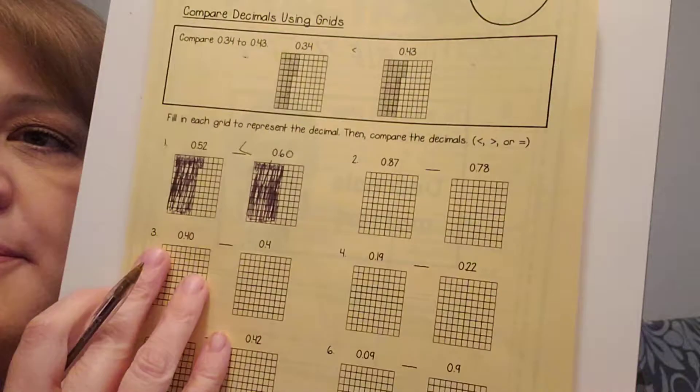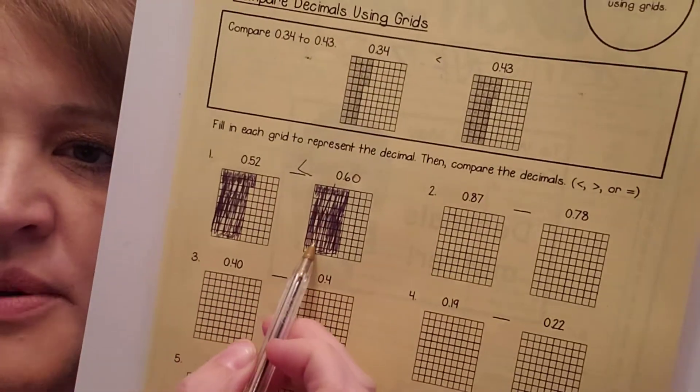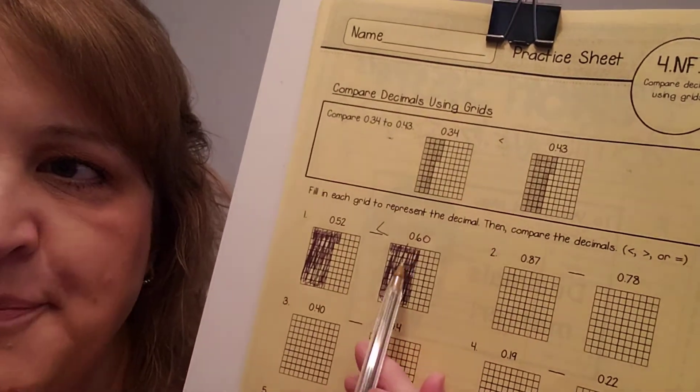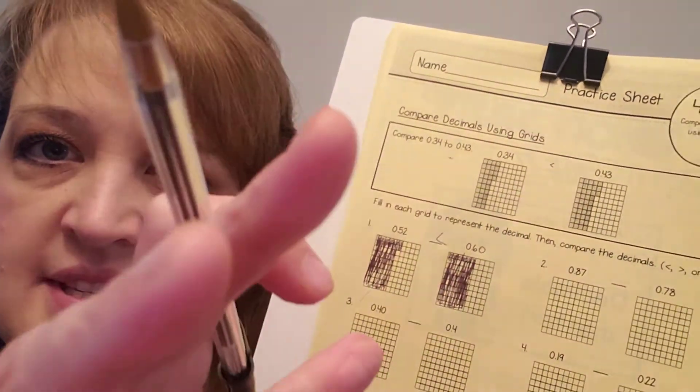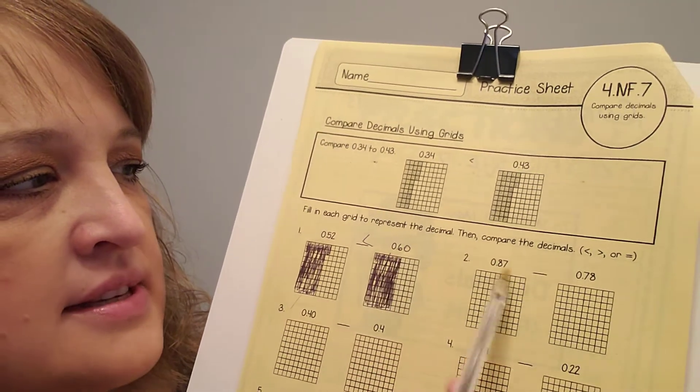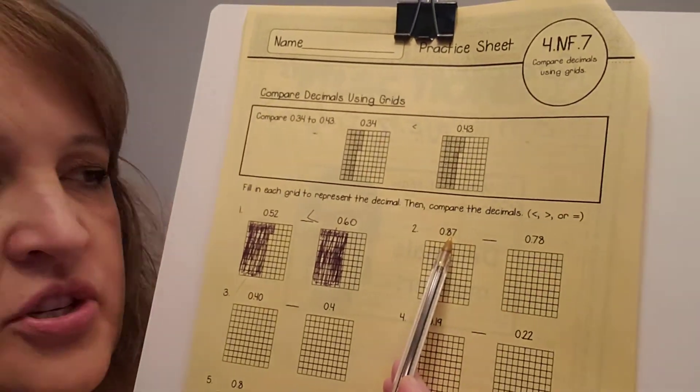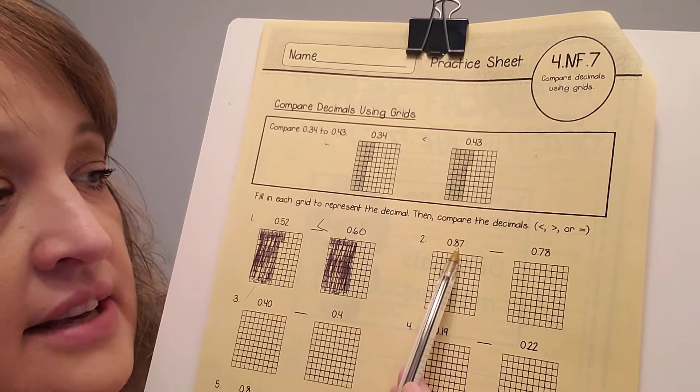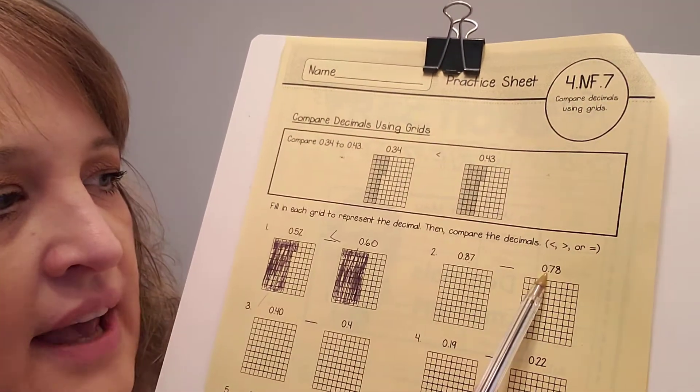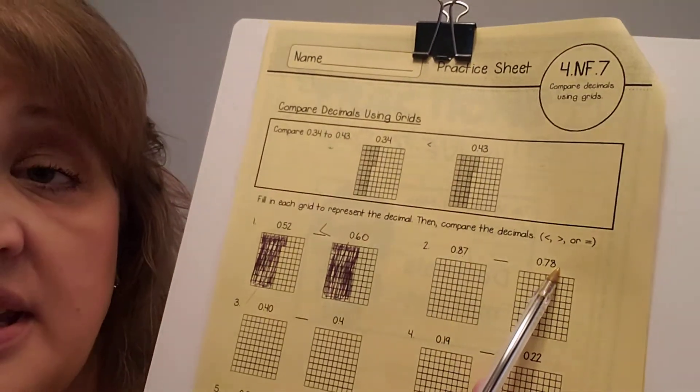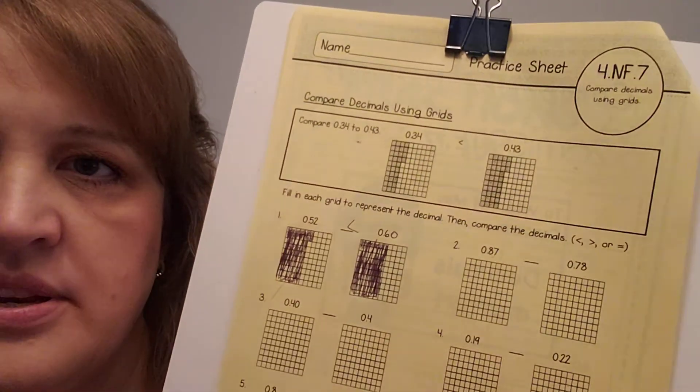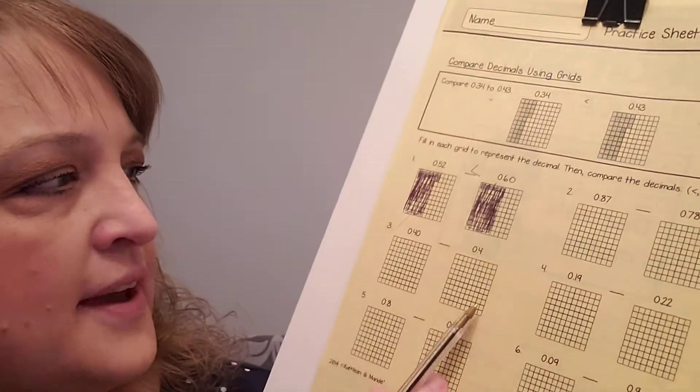So, the main thing that you need to remember on these is to make sure that you're comparing, we call it apples to apples, the same to the same, a hundredths place to a hundredths place. Now, here on number two, we have eighty-seven hundredths. That's to the hundredths place. We have seventy-eight hundredths. That's also to the hundredths place. So, we don't need to add any zeros to them. We can just compare them.